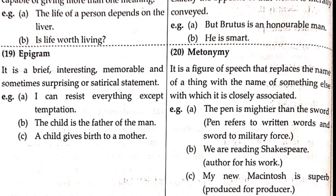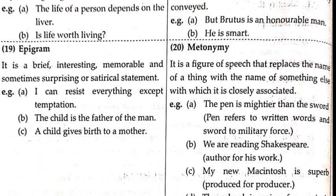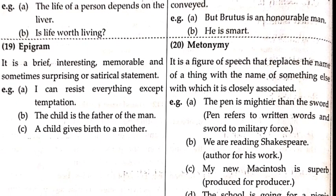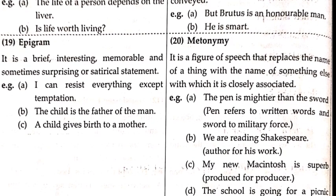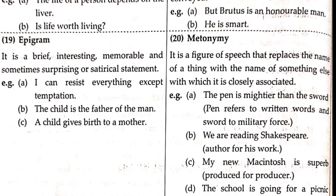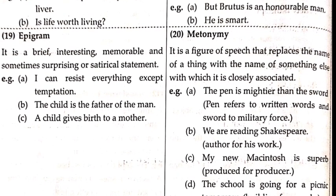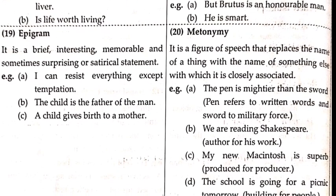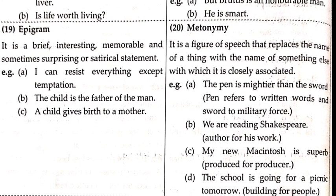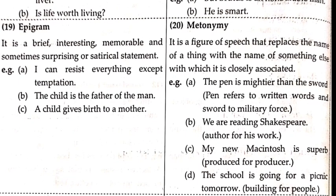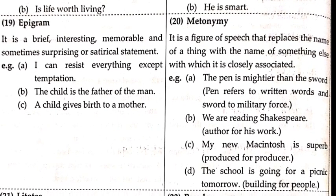Metonymy is a figure of speech that replaces the name of a thing with the name of something else with which it is closely associated. Example: 'The pen is mightier than the sword' — pen refers to written words and sword to military force. 'We are reading Shakespeare' — we read the work written by Shakespeare. 'The school is going for a picnic tomorrow' — the school cannot go, but the children do. Metonymy is used for greater poetic effect.